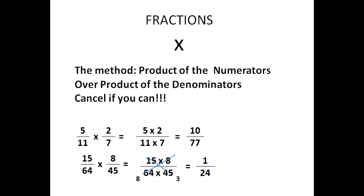The multiplication of fractions is relatively simple: take the product of the numerators over the product of the denominators. And the key tip is to cancel if you can. Our first example: five-elevenths times two-sevenths. Five doesn't go into seven, two doesn't go into eleven, so simply do five times two is ten, eleven times seven is seventy-seven — that's your final answer. Next: fifteen over sixty-four times eight over forty-five. Fifteen goes into forty-five three times, and eight goes into sixty-four eight times.